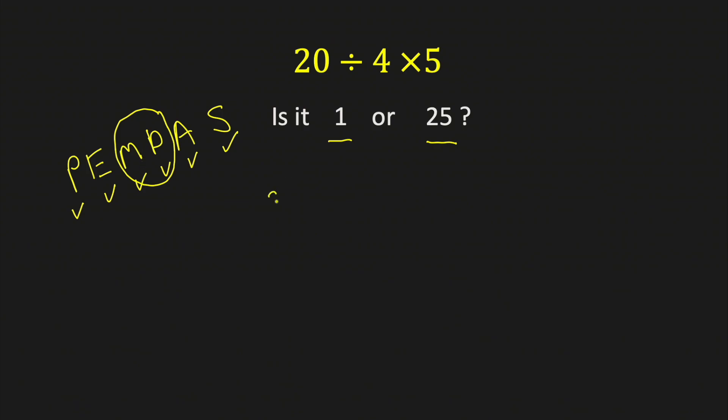So for this problem, we must first take 20 divided by 4 and evaluate that, and we get 5. Then we take 5 times 5, and we get 25. And that's our correct answer.